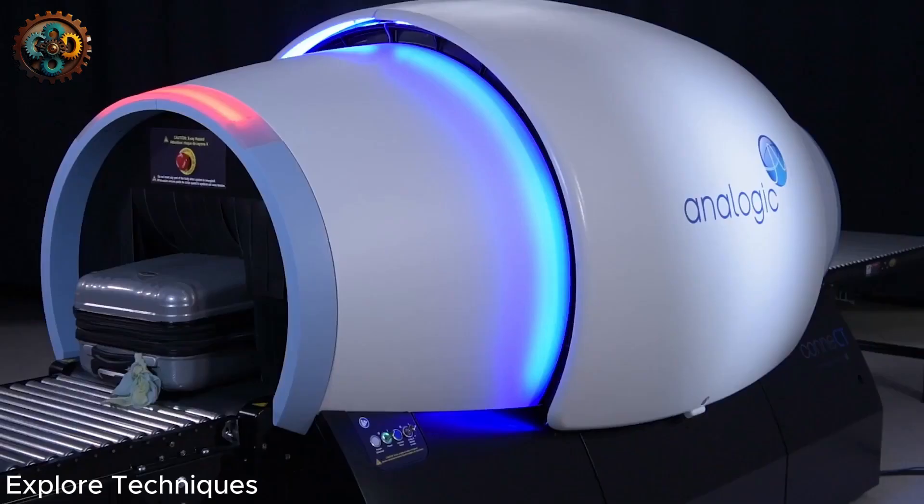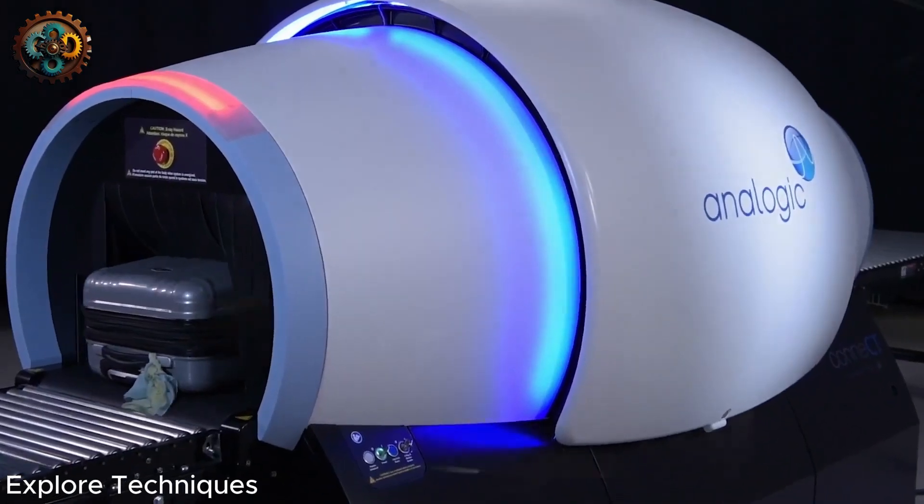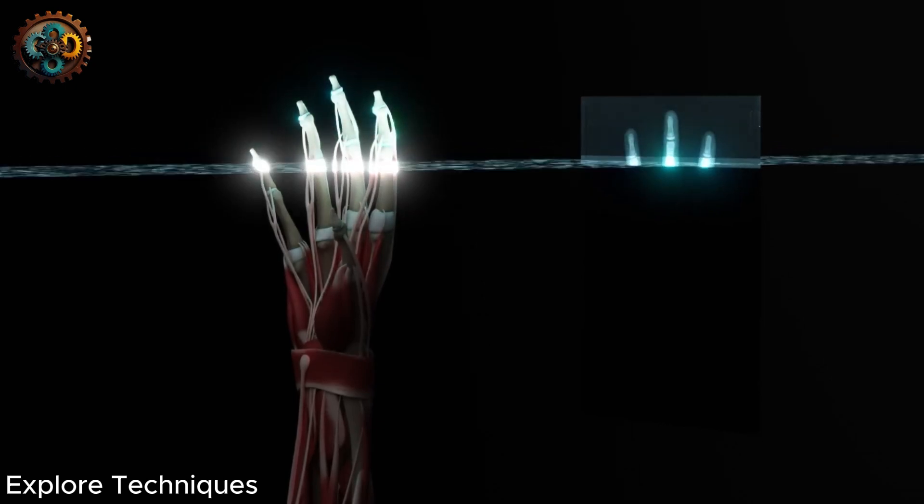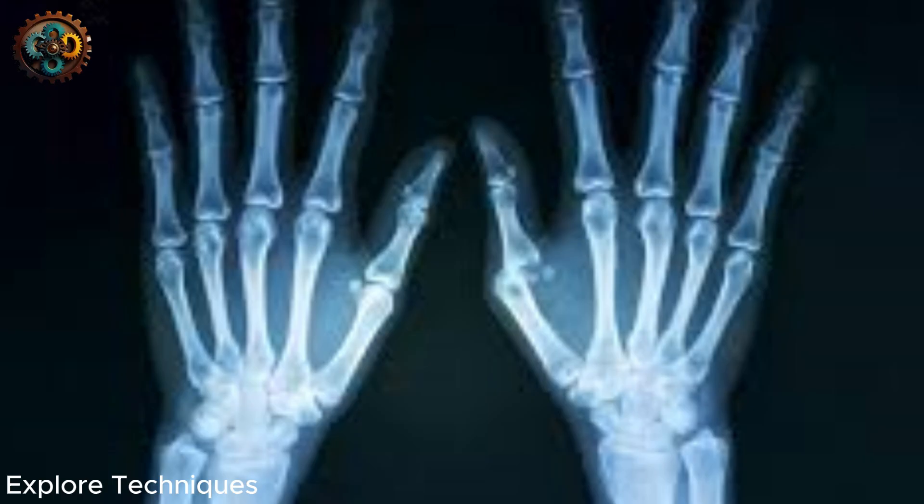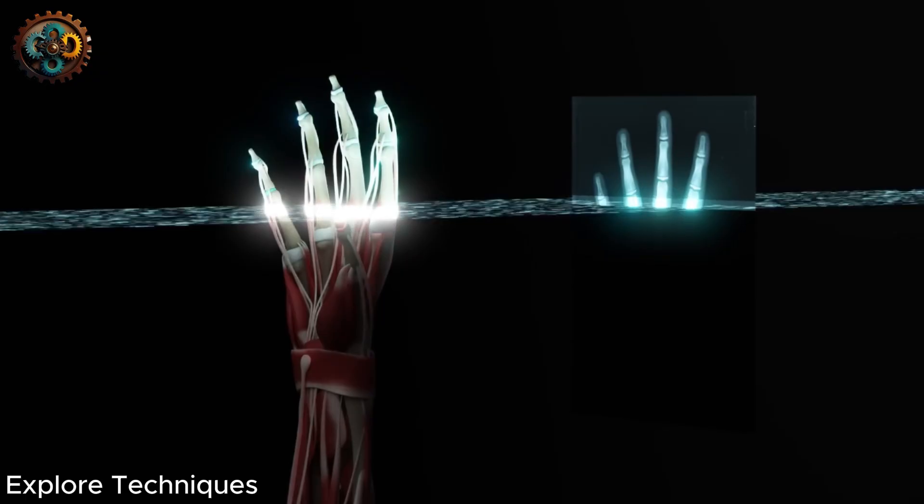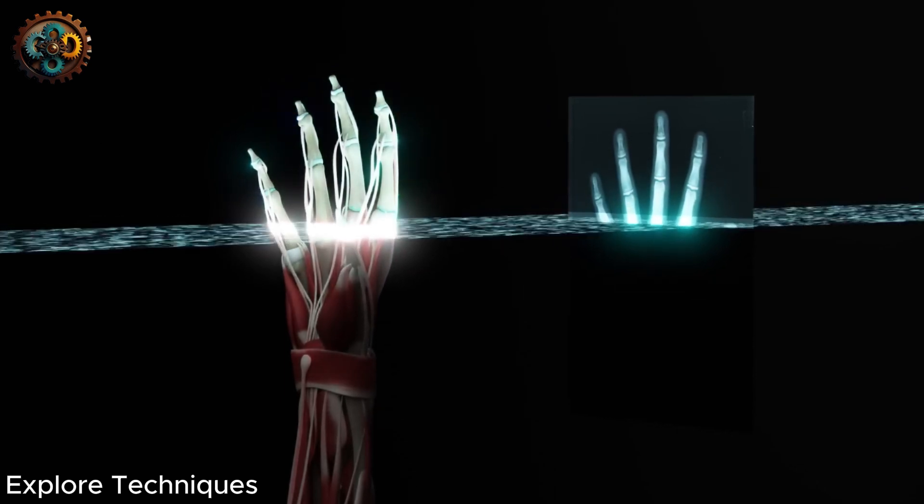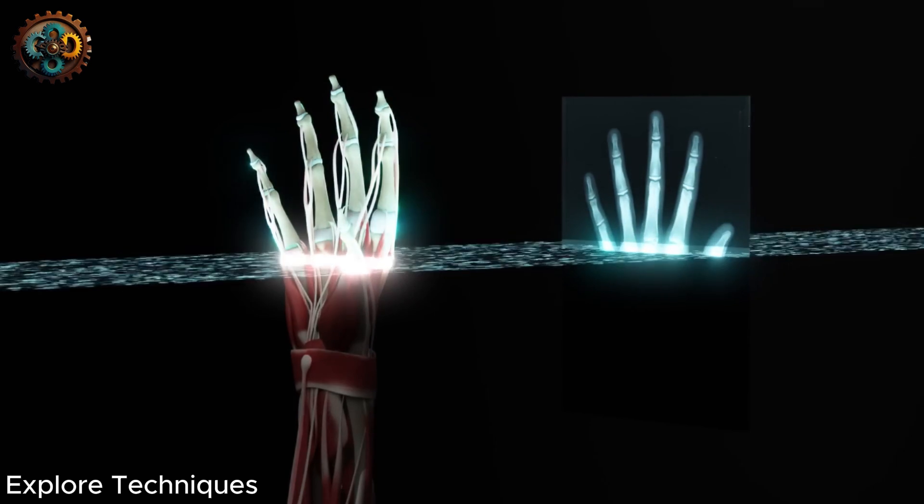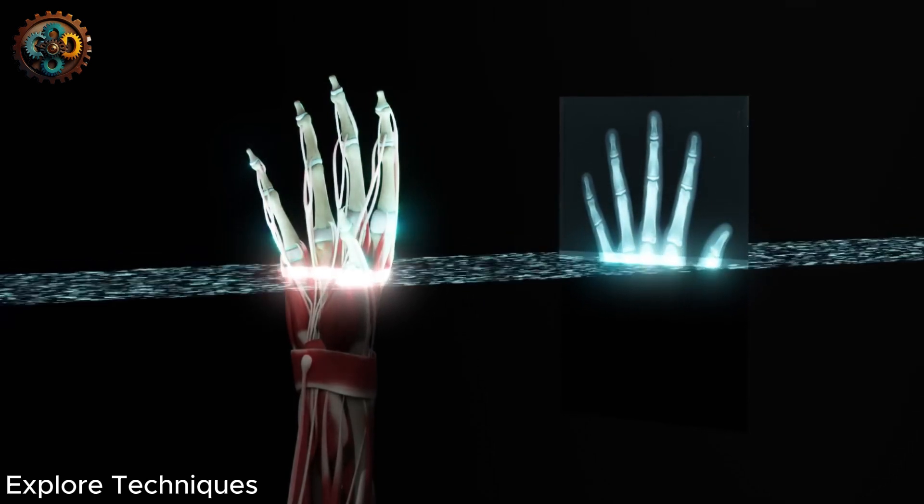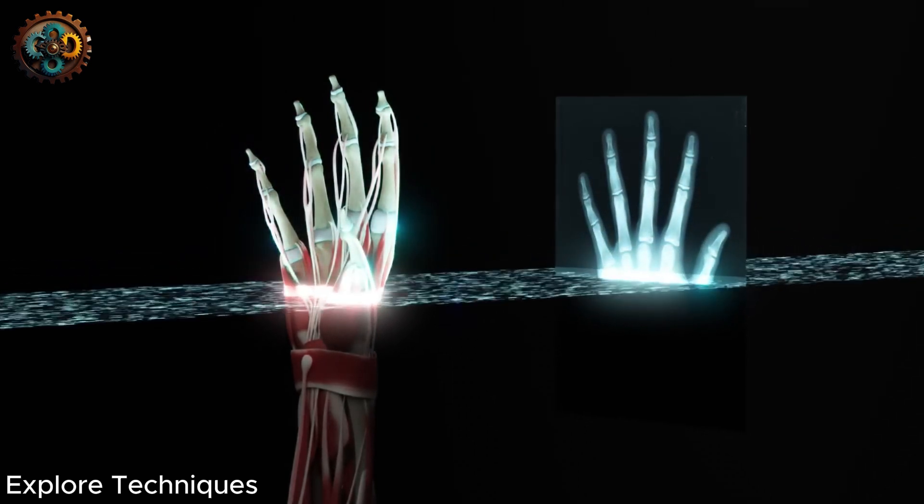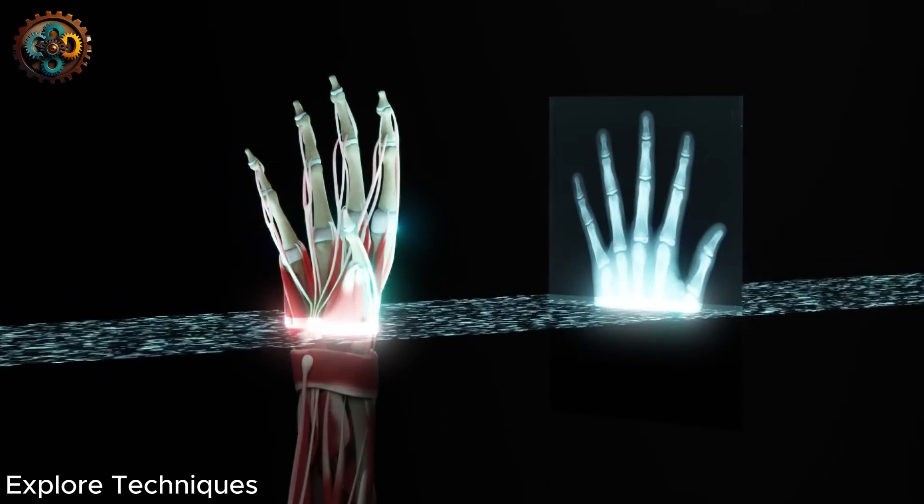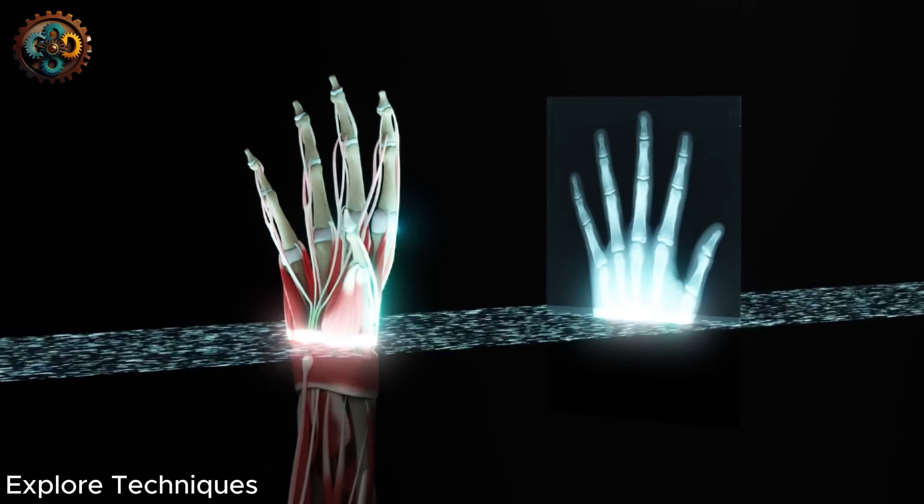When I first heard about this technology, I was surprised because to my knowledge, x-rays cannot distinguish materials so accurately. To explain more about how an x-ray works, it shines beams of electromagnetic radiation through an object, and depending on the density and thickness of the material, it absorbs different amounts of radiation. The result is a grayscale image, with the brightness of the pixels determined by how much radiation is absorbed. This allows objects such as knives or other sharp metal objects to be easily identified.